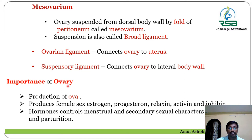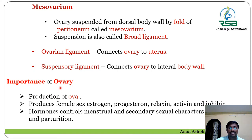The ovary is the primary sex organ in the female reproductive system and plays a significant role in the production of ova or eggs released at each menstrual cycle. The ovary also develops female sex hormones. It produces estrogen, which is one of the most important female reproductive hormones, as well as progesterone, relaxin, activin, and inhibin.